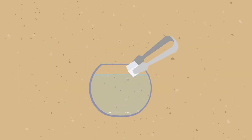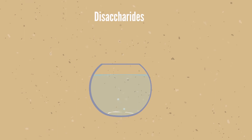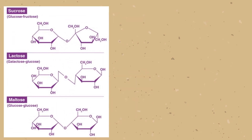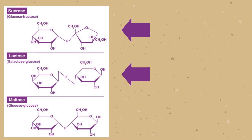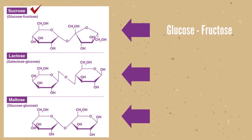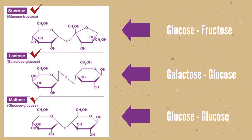Like monosaccharides, disaccharides are simple sugars soluble in water. Three common examples of disaccharides are sucrose, lactose, and maltose. Sucrose is formed by glucose and fructose. Lactose is the combination of galactose plus glucose, and two monosaccharide molecules form the disaccharide maltose.